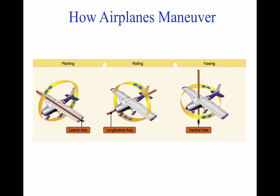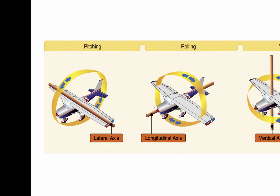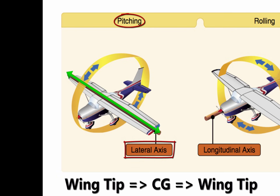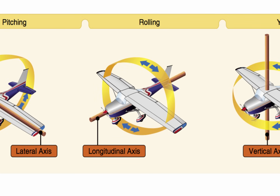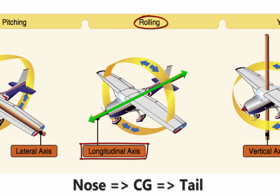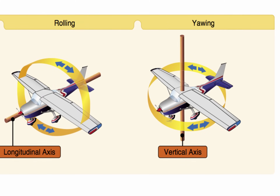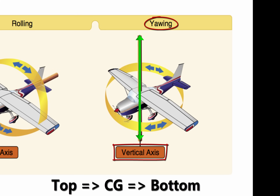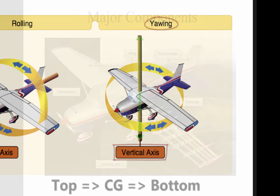Aircraft move around three different axes. The lateral, or pitch axis, is a line drawn from the wing tip through the plane's center of gravity to its other wing tip. The longitudinal, or roll axis, is drawn from the nose to the tail of the aircraft, again passing through the center of gravity. And the vertical, or yaw axis, is drawn vertically down through the plane's center of gravity.